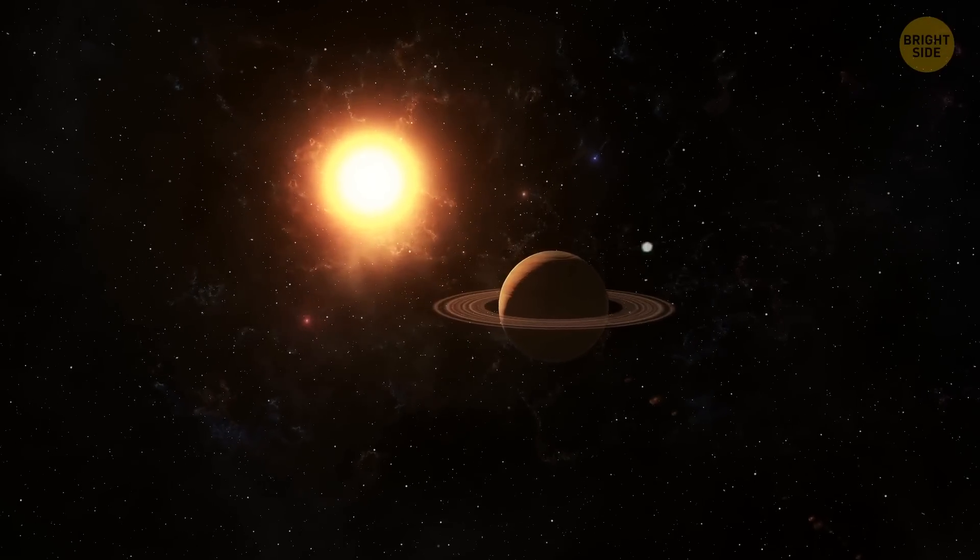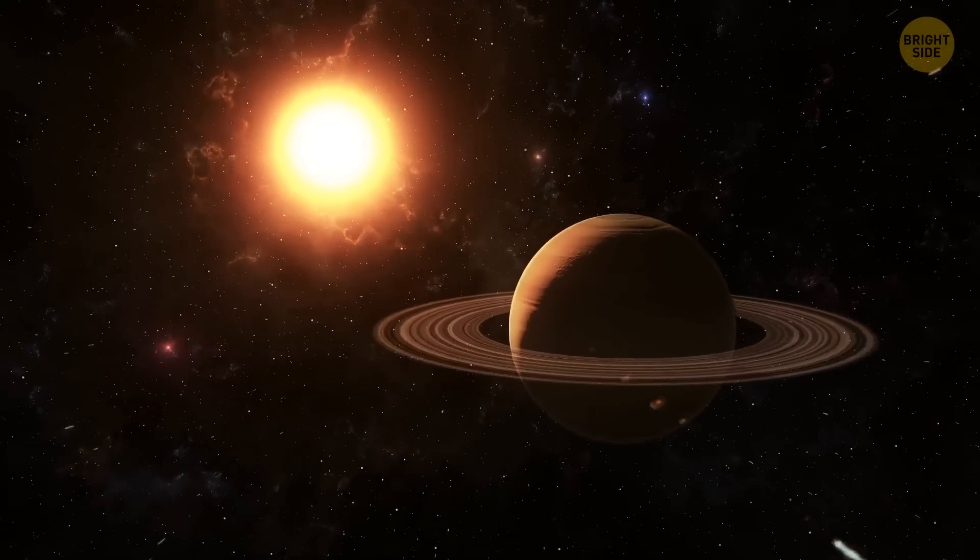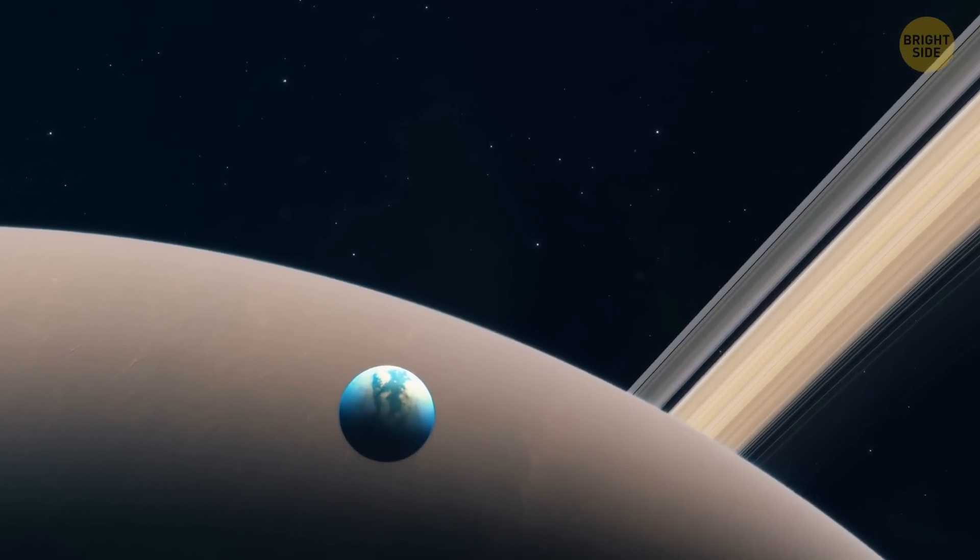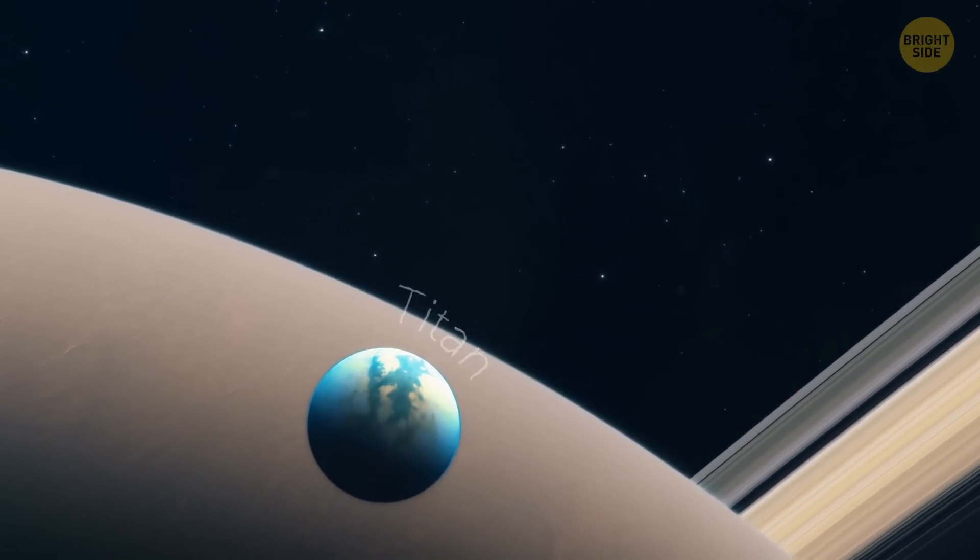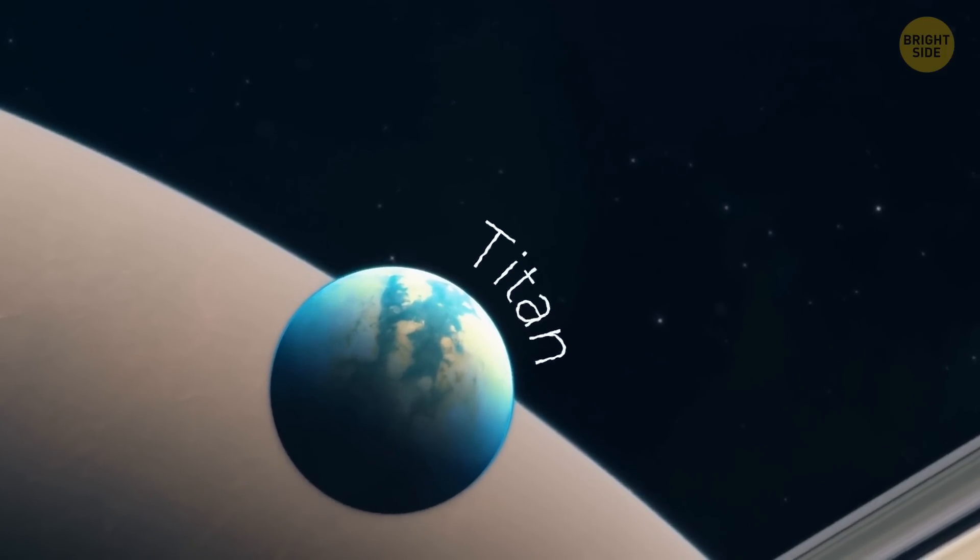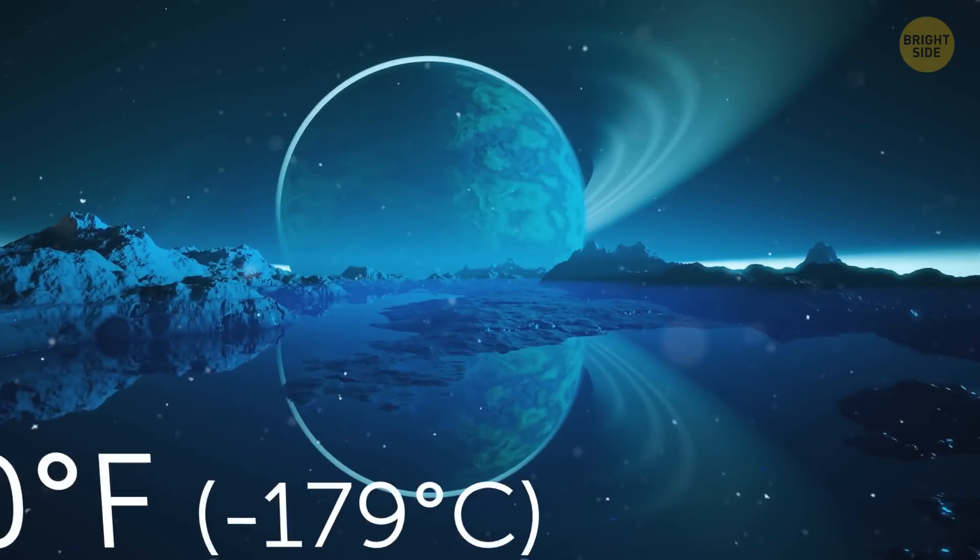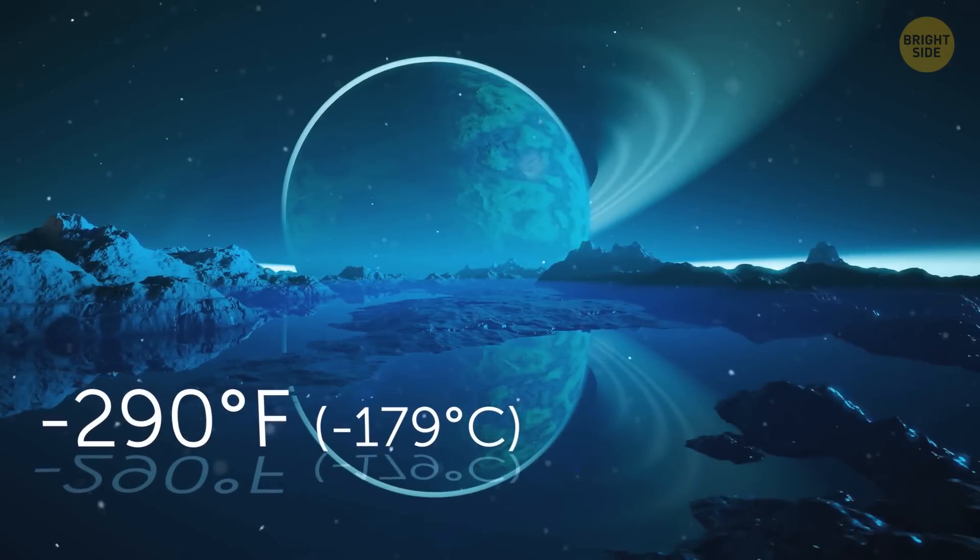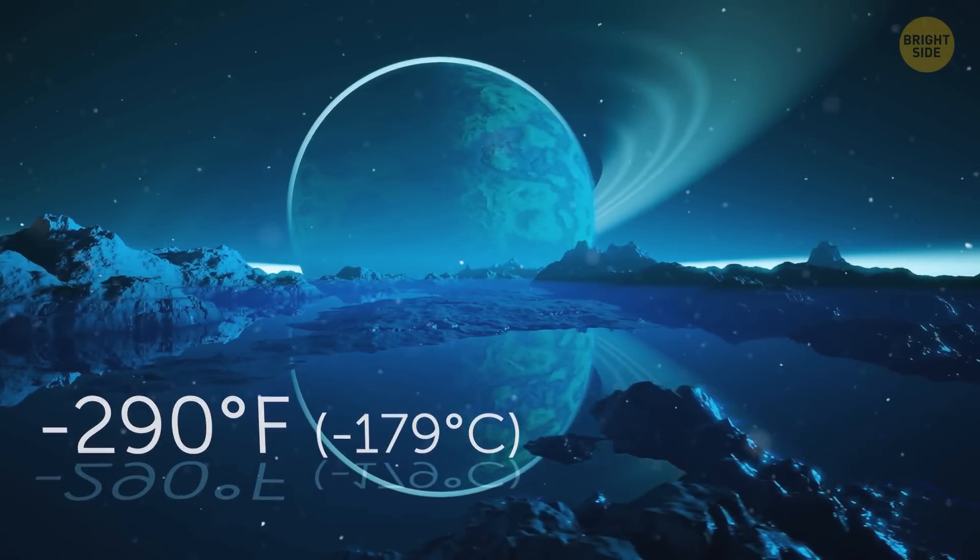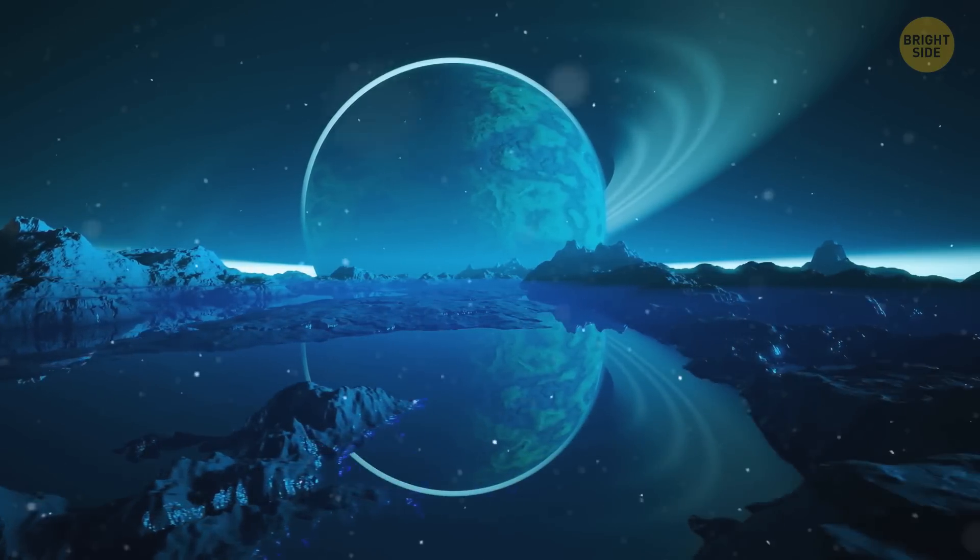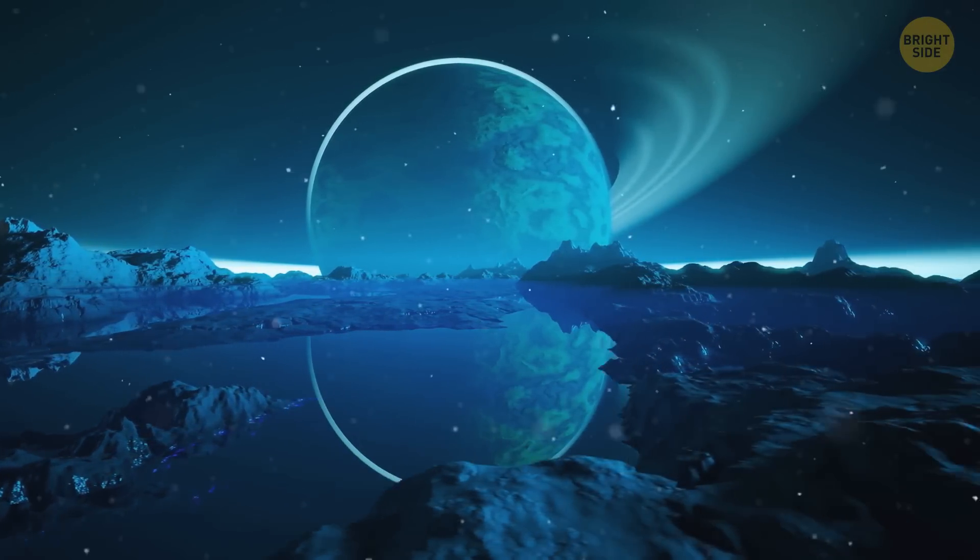In fact, Saturn is winning the lottery when it comes to life candidates. For example, scientists have a wild idea that Titan, another of its moons, might be home to extraterrestrial life as well. Titan is a frosty moon, chilling at about minus 290 degrees Fahrenheit. Surprisingly, it has some lakes on its surface. But don't imagine your typical water bodies. These lakes are believed to be filled not with water, but with liquid ethane or methane.